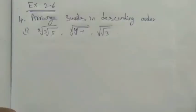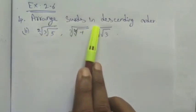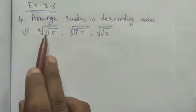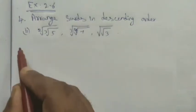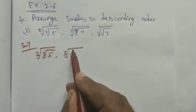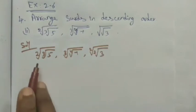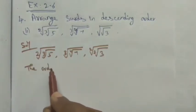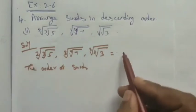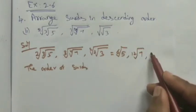Hi students, class 9 exercise number 4.2, question number 4 roman number 2: arrange the surds in descending order. We have square root of cube root of 5, cube root of fourth root of 7, and square root of square root of 3. The order of these nested roots are 2×3=6th root of 5, 3×4=12th root of 7, and 2×2=4th root of 3.